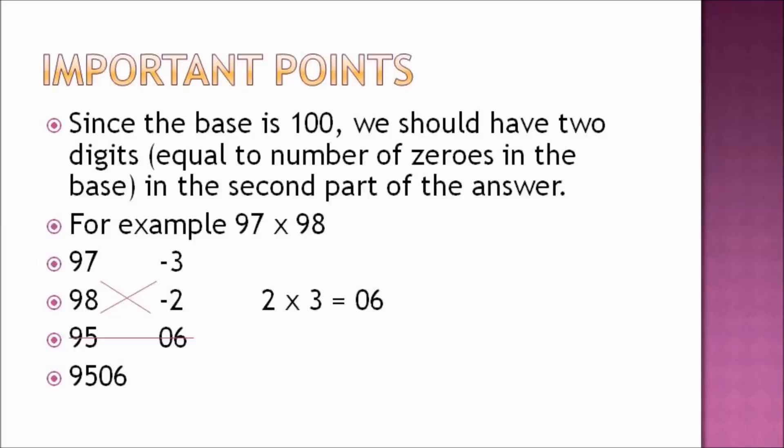For example, 97 × 98. In this case, 97 - 100 = -3 while 98 - 100 = -2. Now 3 × 2 = 6, which is a single digit number. Here we will take 6 as 06 for the second part of the answer. The first part is 9,500. Adding 9,500 to 06 gives us the result 9,506.